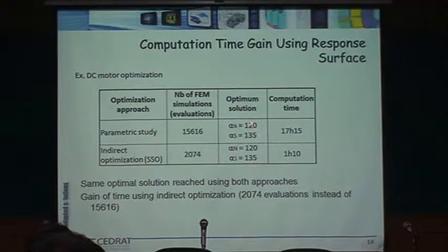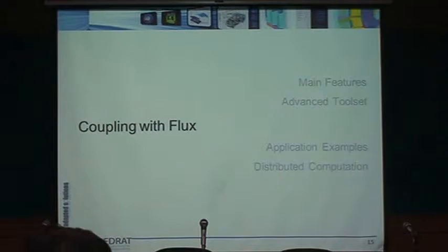Both methods find the exact same optimum at the end, but one takes just over 17 hours while the other takes just over 1,000 hours. That's one of the key benefits Godit offers through its advanced adaptive methods.